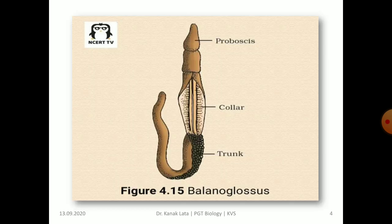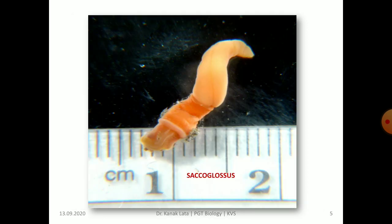In the given figure, you may observe Balanoglossus. You can see here proboscis, collar and trunk. This is Saccoglossus. Here you can see how small this worm is.